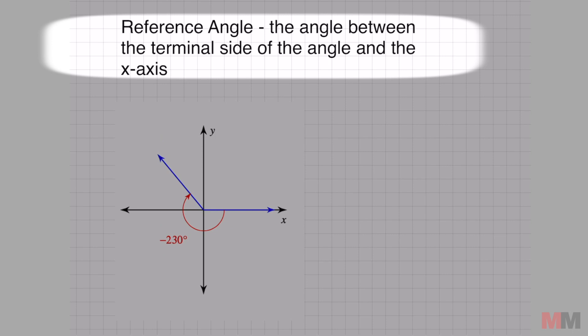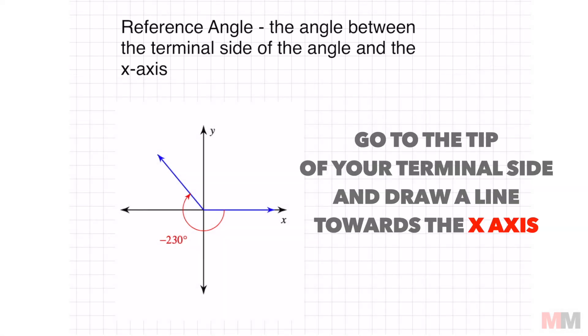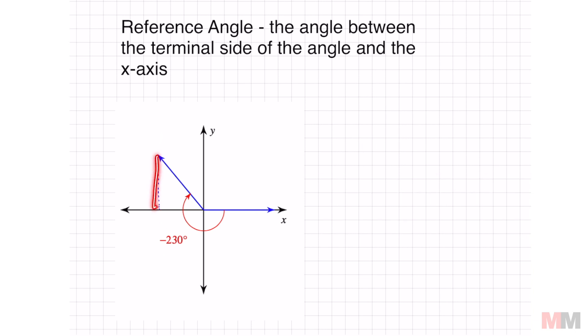A reference angle is just the angle between the terminal side, so this is your terminal side, that blue arrow right there, and the x-axis. So easy way to draw this, all you have to do is go from the tip of your terminal side all the way to your x-axis.